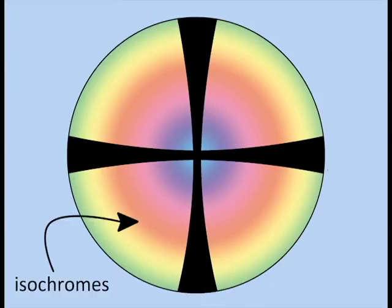Isochromes are curved lines of equal color. They depend on the optical symmetry and orientation of the crystal. The number of isochromes depends on the birefringence, the thickness of the plate, and the objective.